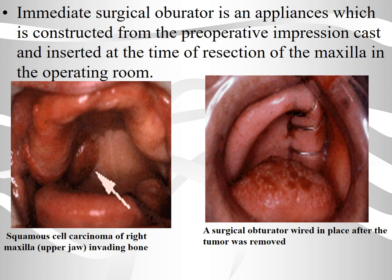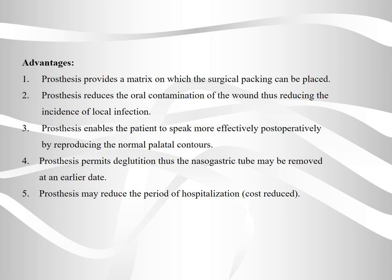On the right photo, you can see a surgical obturator wired in place after the tumor was removed. The advantages include: the prosthesis provides a matrix on which the surgical packing can be placed, reduces oral contamination of the wound thus reducing the incidence of local infection, enables the patient to speak more effectively post-operatively by reproducing the normal palatal contours, and permits deglutition so the nasogastric tube can be removed at an earlier stage.